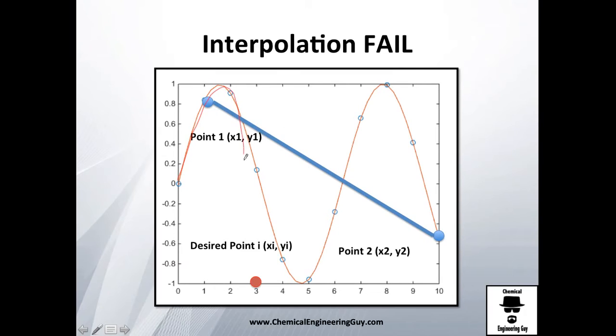Now imagine you only have this data here and this data right here, and you want to know the value at 3. So you make this straight line, which of course does not model the process at all. If you plug this value in, you get 0.6 when in reality you will have 0.15. So you have four times that, which is a lot of error.